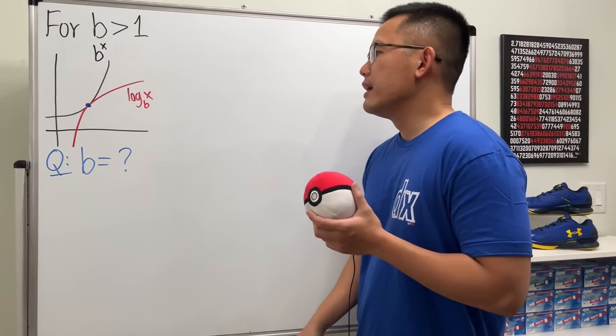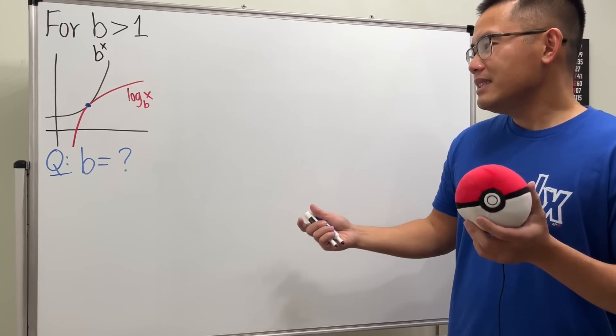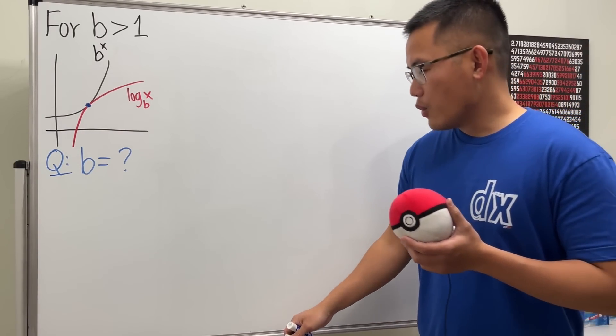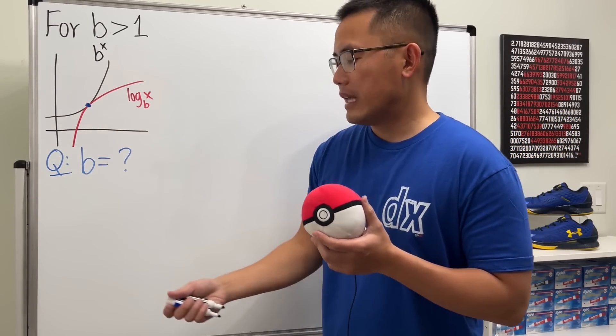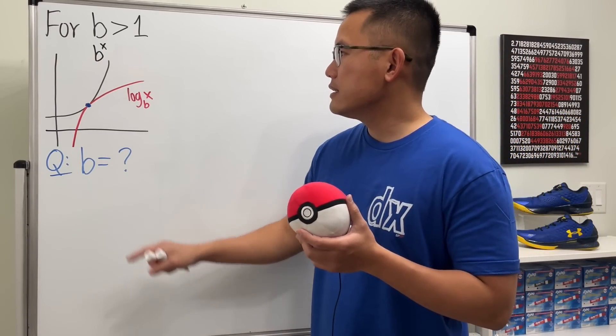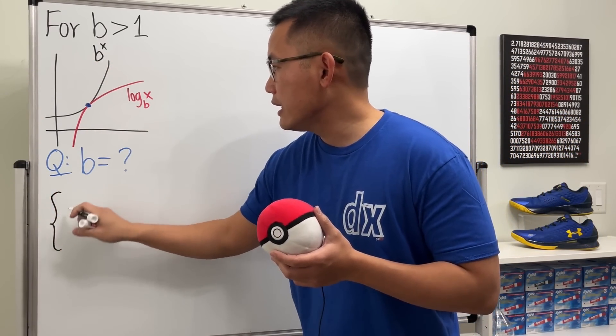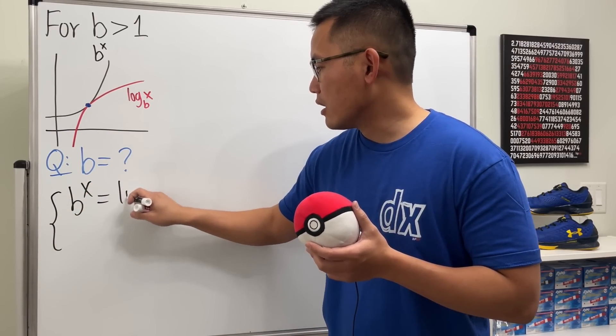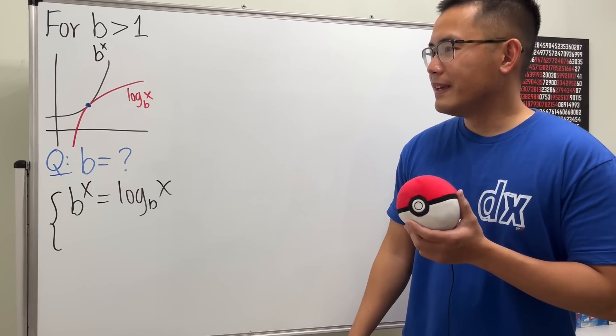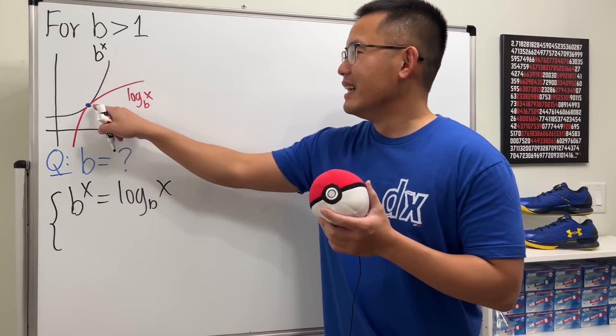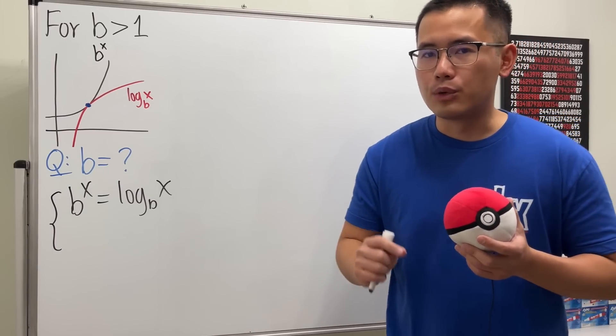How can we solve this though? Technically this is just a typical Calc 1 question. Whenever we have two curves touching each other in a tangent way, we just have to do the following: first, make the functions equal to each other, so b^x equals log base b of x. Then, to have them touch in a tangent way, we also have to make sure they have the same derivative.